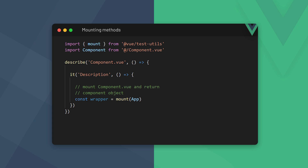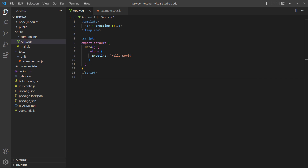Both methods are imported into our test script from the test utilities package, and they take the component we want to mount as an argument. As an example, we have a greeting message in our root app component that gets rendered to the page. We want to test if the correct words are rendered.